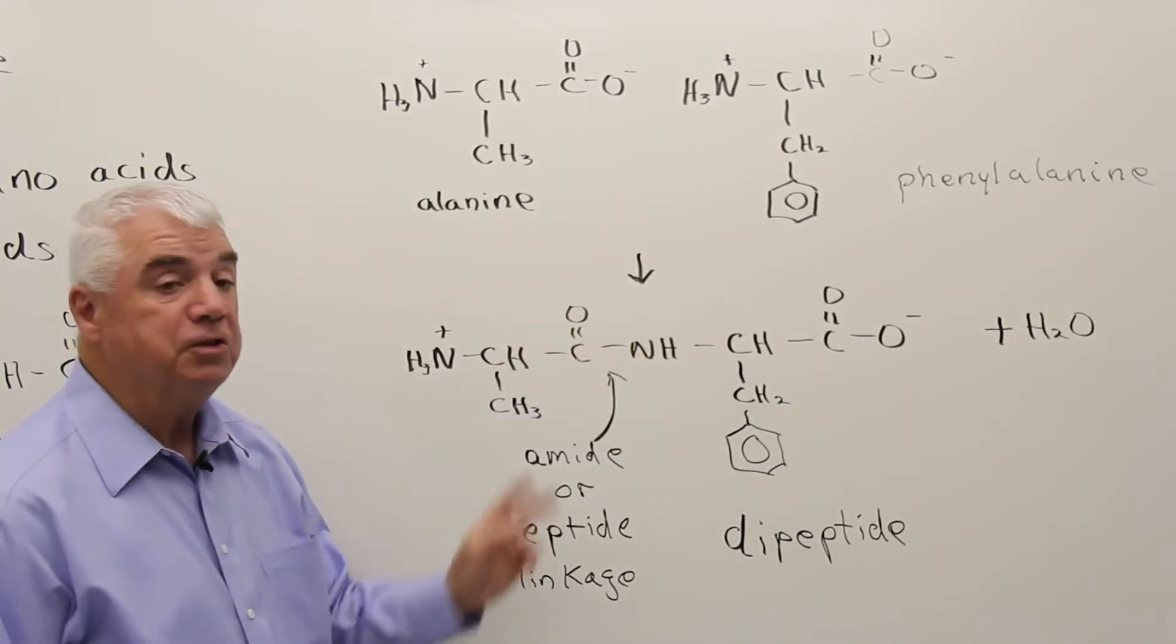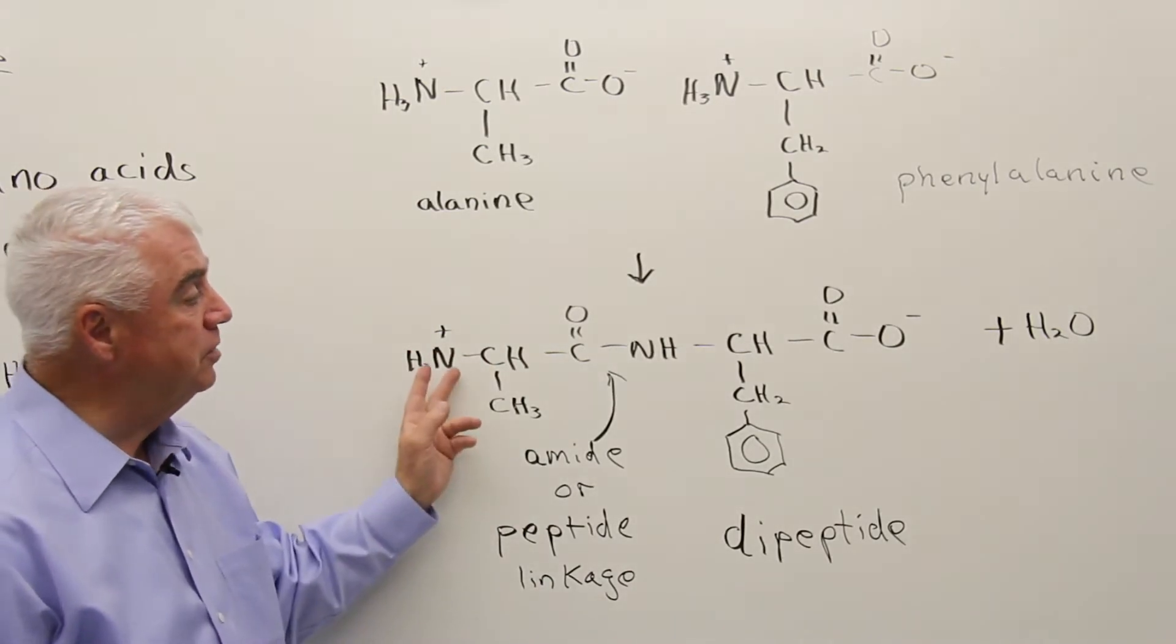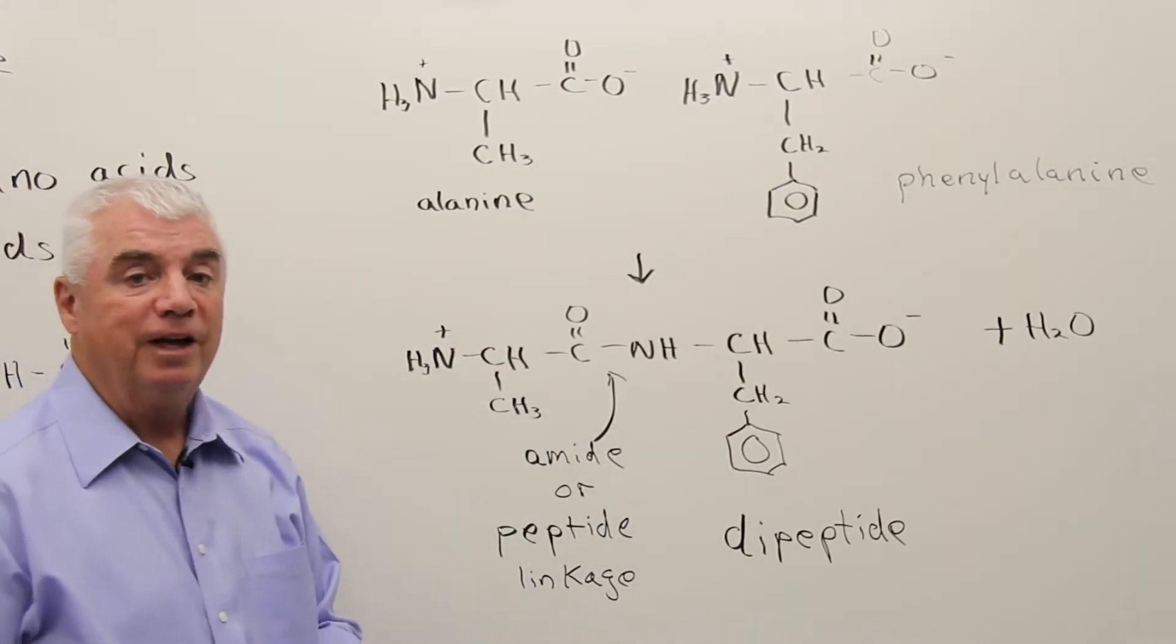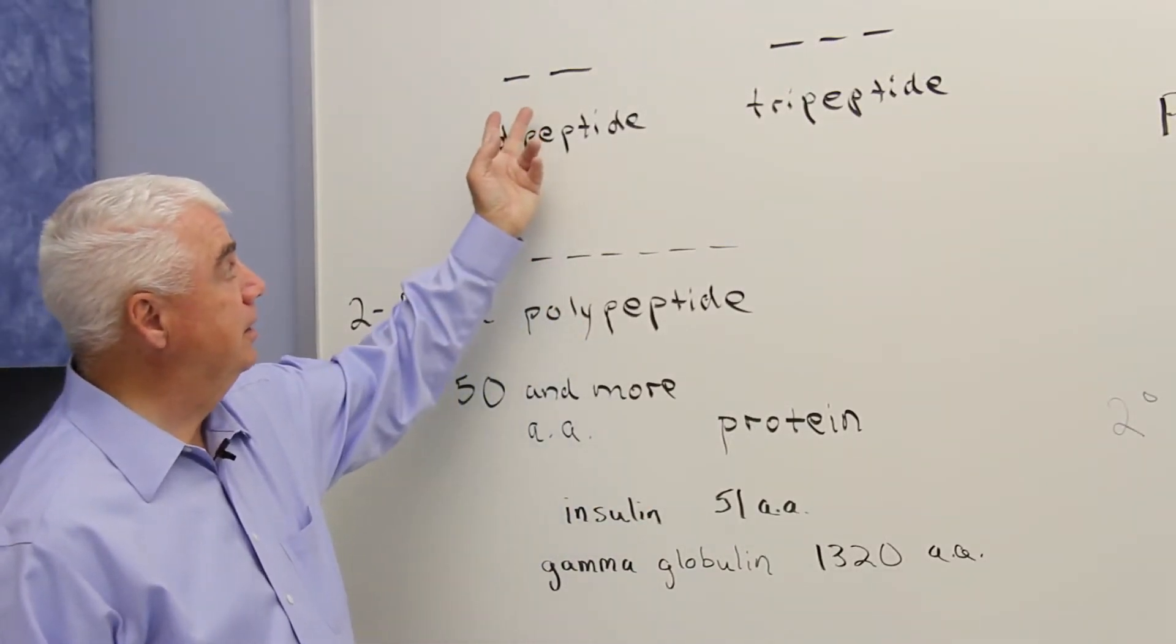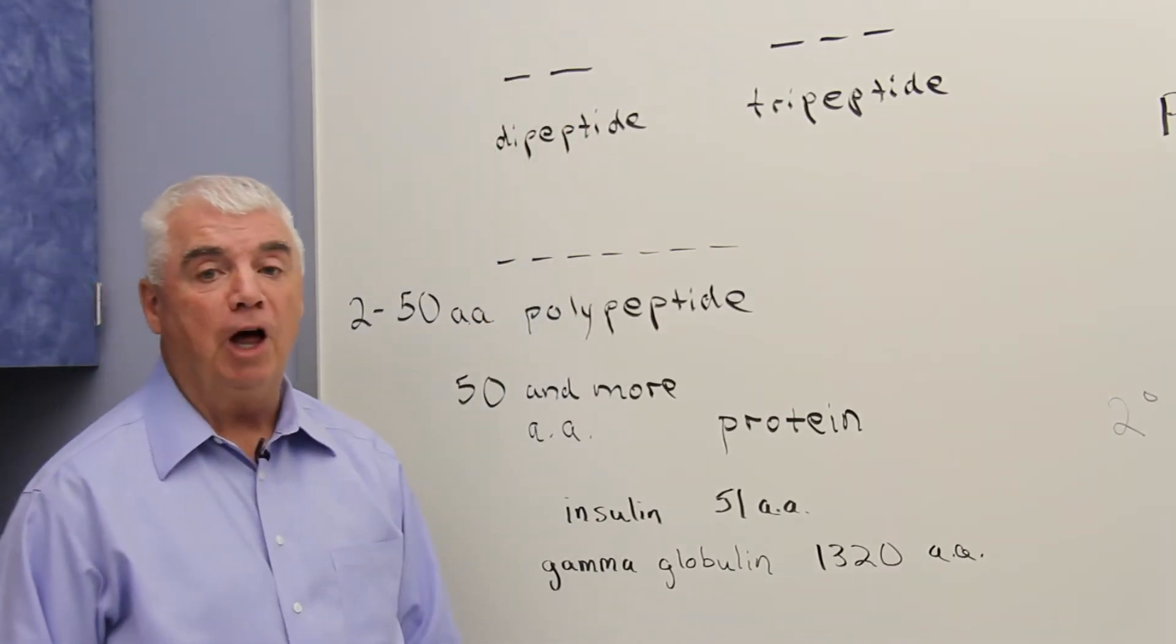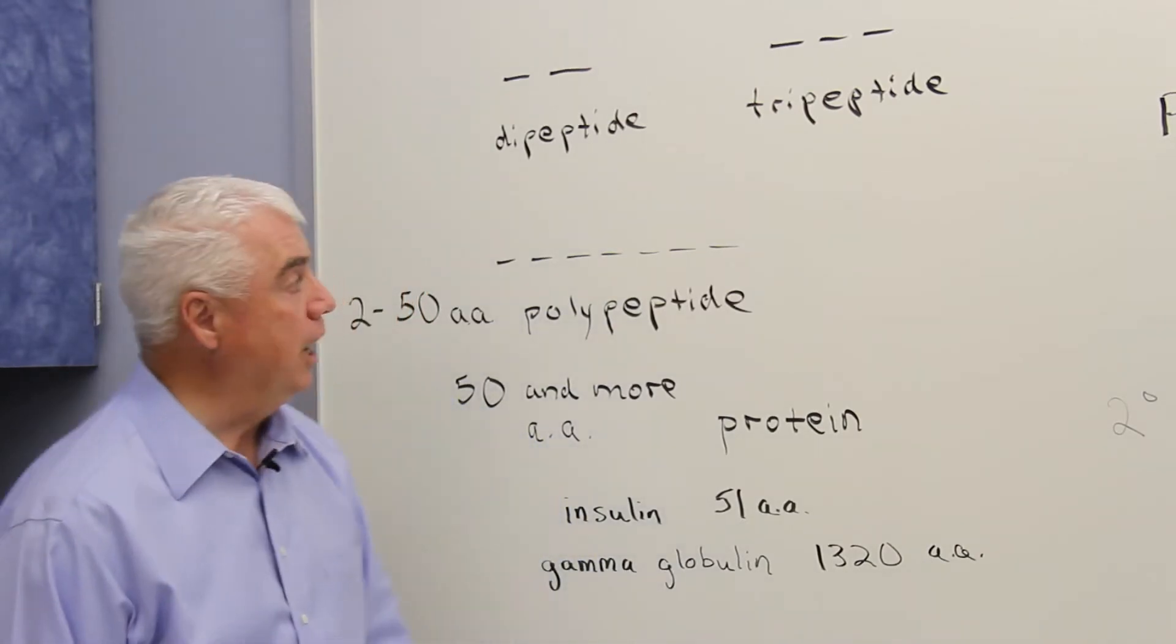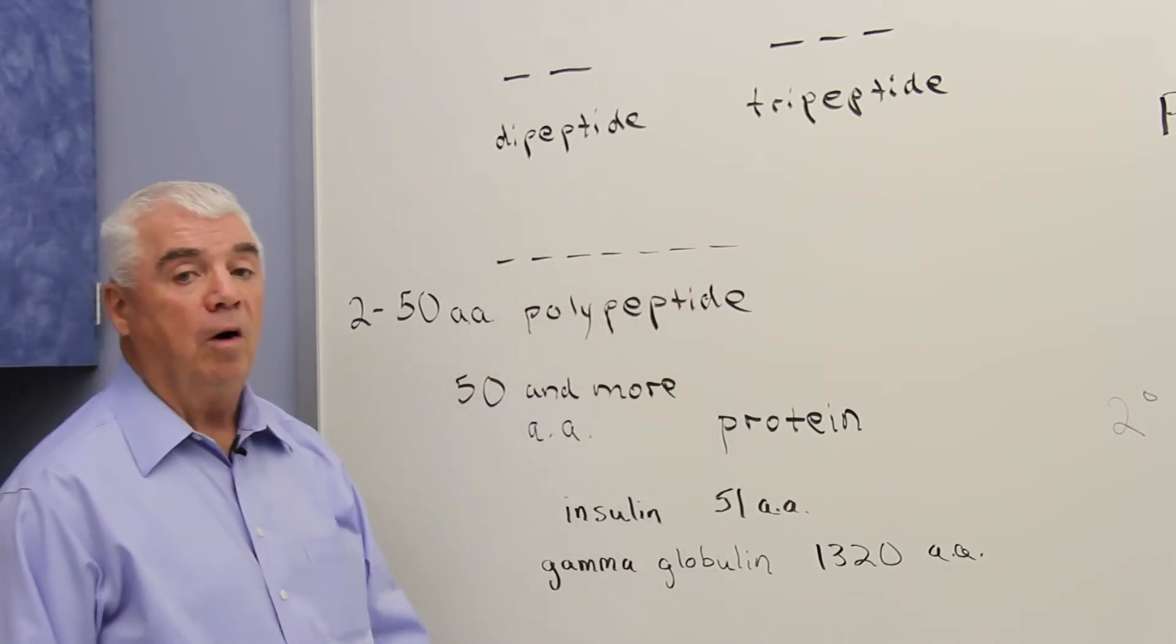Let's consider what happens now as we react more amino acids with this. Because we've got a reactive group over here on the right-hand side and we've got one on the left, so we could continue and build this chain. I've represented the dipeptide up here at the top of the left with two lines, and the break between the two lines could symbolize the peptide linkage. If we put three amino acids together, we'd have a tripeptide. We could extend that chain longer and longer and get what we call a polypeptide.